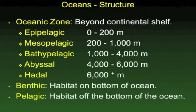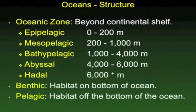The oceanic zone is beyond the continental shelf, and here we divide the ocean vertically. We start with the epipelagic region — the top section of the water column — then the mesopelagic zone in the middle, then the bathypelagic, the lower zone. Underneath, in the very deep areas, we have the abyssal zone and the hadal zone in the deepest areas of all. Organisms living on the bottom are called benthic organisms, and those in the water column are called pelagic organisms.